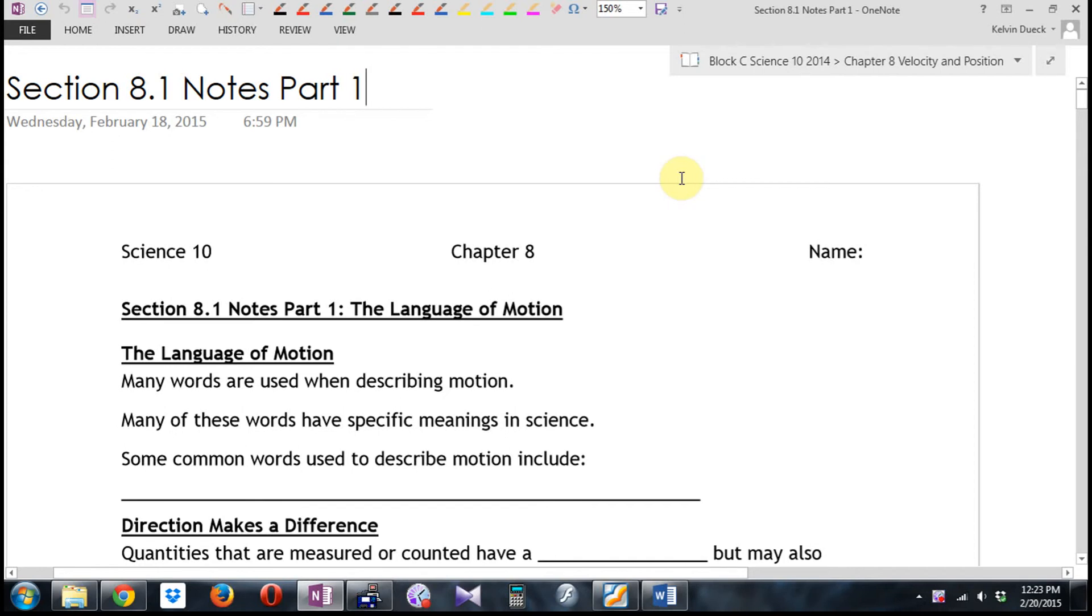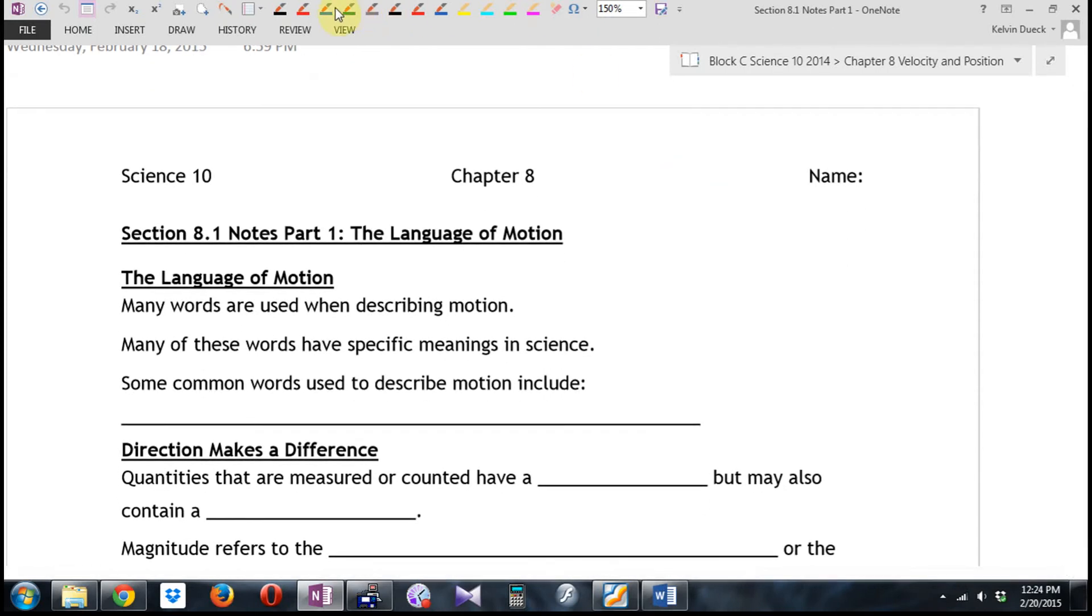Today is going to be some vocabulary. What we're going to be looking at for the next two chapters is how things move. In particular, what we want to be able to do is predict how things move. If I tell you an object's initial speed, if I tell you how long it's moving for, if I tell you what it's accelerating at, can you tell me how fast it's going after 12 seconds, after 18 seconds, after 21 seconds? Or can you tell me how far it's traveled in that time? So today we're going to be dealing with some vocabulary. The language of motion is what I call this.